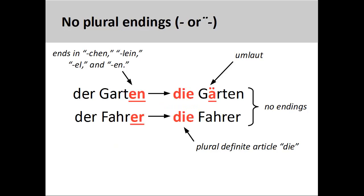The first group consists of nouns that do not take a plural ending, although some of them may add an umlaut to the stem vowel of the noun. Most nouns in this group are masculine and neuter nouns ending in -chen, -lein, -el, and -en. The noun Garten, garden, adds an umlaut in the plural, Gärten, whereas another noun, Fahrer, driver, does not. You will note that the definite article of all plural nouns is always die.